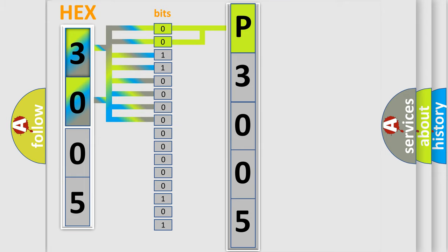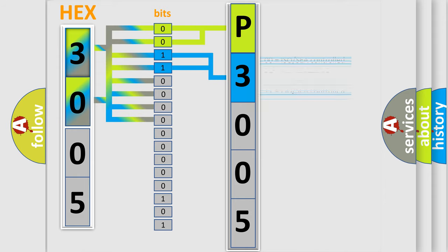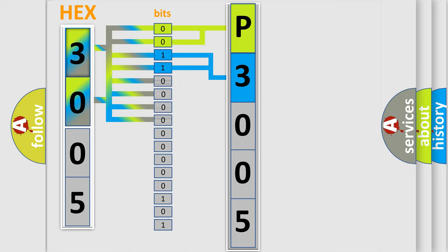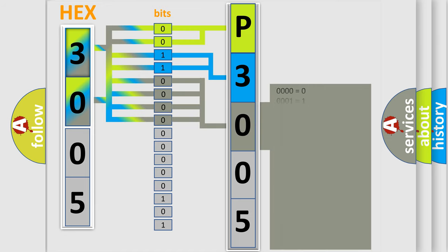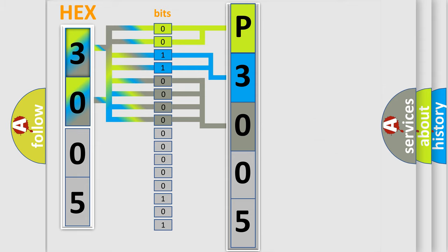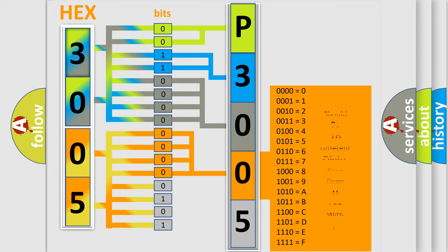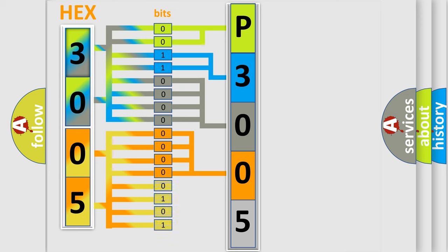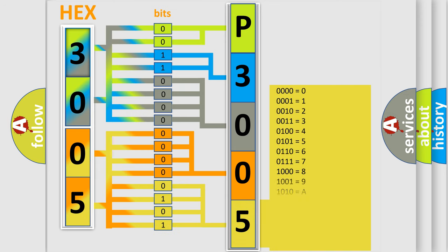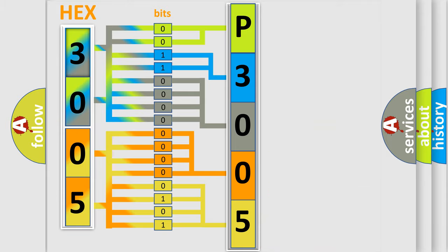The next two bits determine the second character. The last bits of the first byte define the third character of the code. The second byte is composed of a combination of eight bits. The first four bits determine the fourth character of the code, and the combination of the last four bits defines the fifth character. A single byte conceals 256 possible combinations.